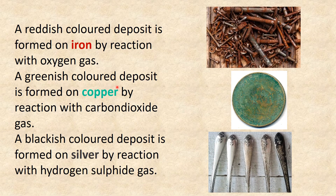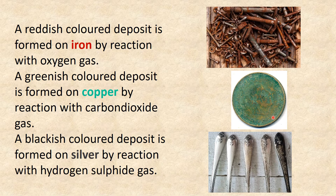Some examples: a reddish color deposit is formed on iron by reaction with oxygen gas. A greenish color deposit is formed on copper by reaction with carbon dioxide gas. A blackish color deposit is formed on silver by reaction with hydrogen sulfide gas.